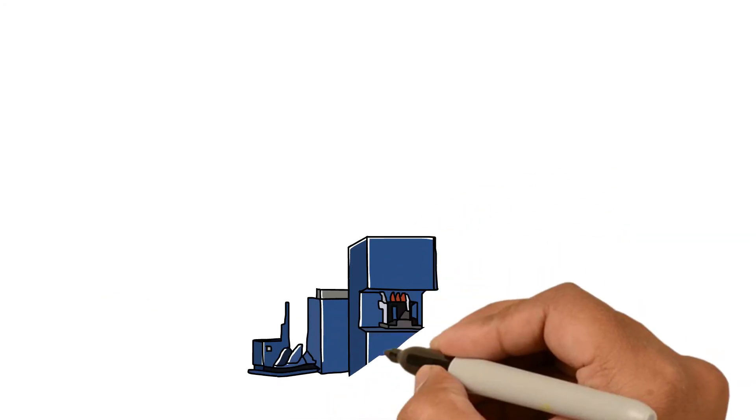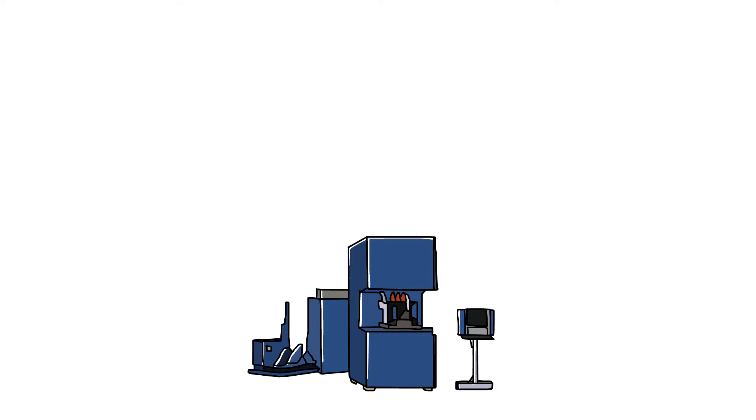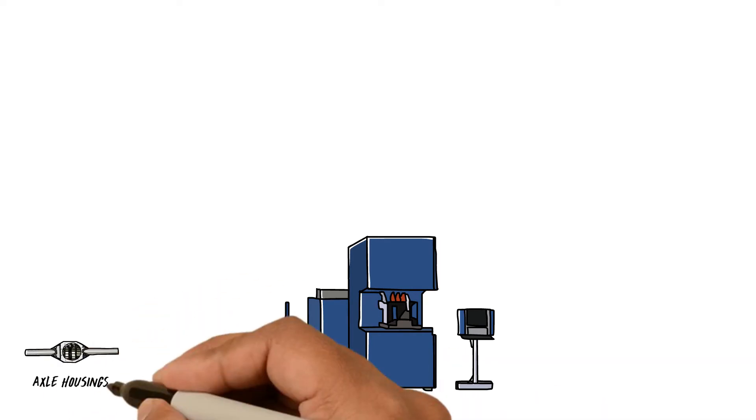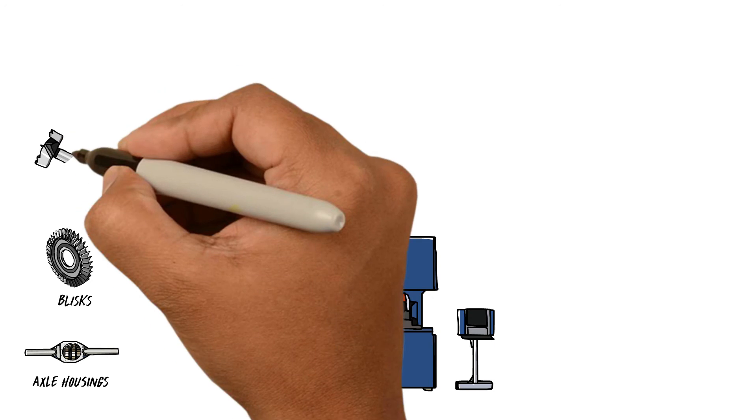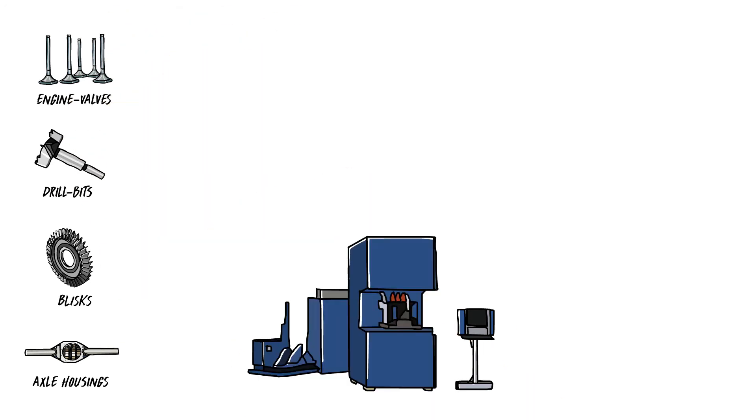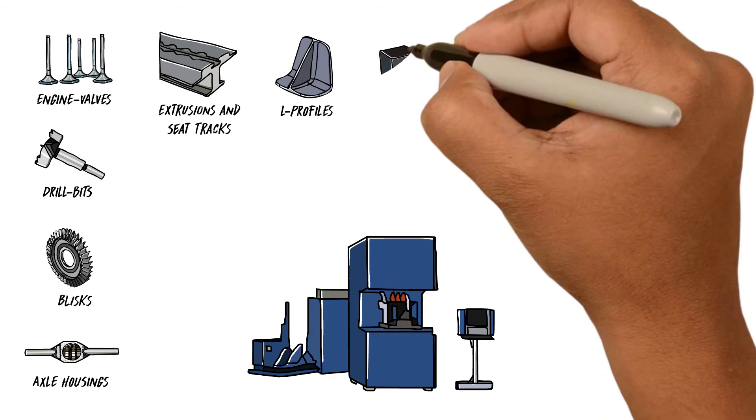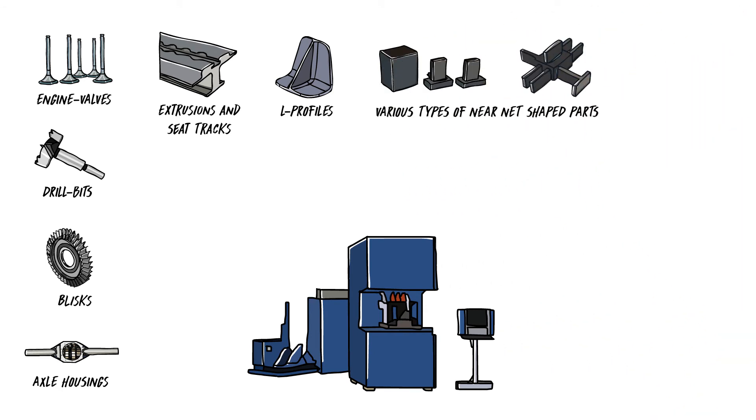Our LFW machines are ideal for many mainstream manufacturing applications. For example, axle housings, blisks, drill bits, engine valves, extrusions and seat tracks, L-profiles, various types of near-net shaped parts, pup joints, and spleen shafts.